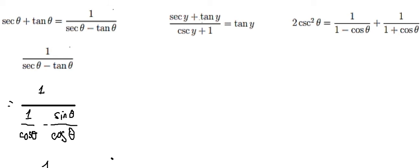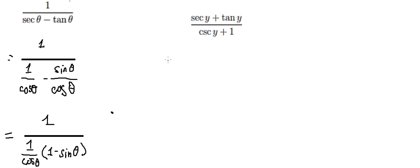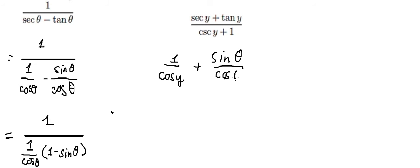Now let's go to question number two. We need to work with secant y, tan y, and cosecant of y, involving one minus cosine y plus sine y, plus sine y over cosine y.